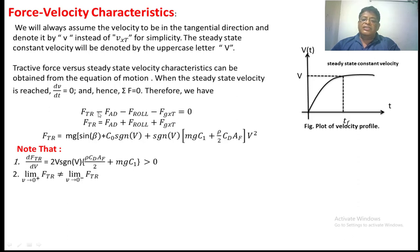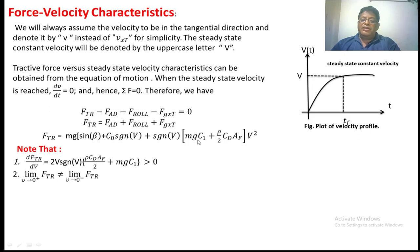From this we find Ftr equals Fad plus Frol plus FGxt. Substituting the known formulas, we get Ftr equal to mg·sinβ plus C0·signV plus signV·mg·c1 plus (ρ/2)·Cd·Af·V². The rate of change of tractive force with respect to velocity equals V·ρ·Cd·Af/t plus mg·c1, which should be greater than 0. Also, the tractive force at t=0+ must equal that at t=0−.